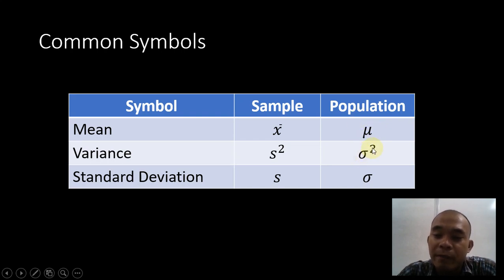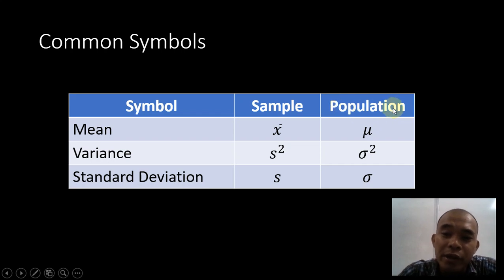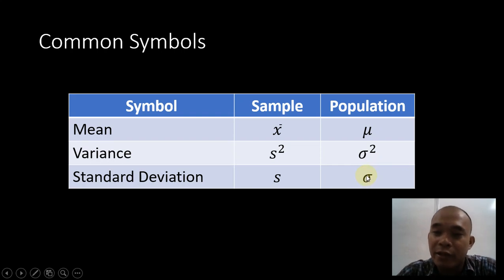How about the variance — sigma-squared? You cannot find the letter O in the word 'sample.' However, in the word 'population,' you can find two letter O's. So that's how you remember sigma-squared belongs to the population. The standard deviation follows the same logic. Very easy to distinguish.